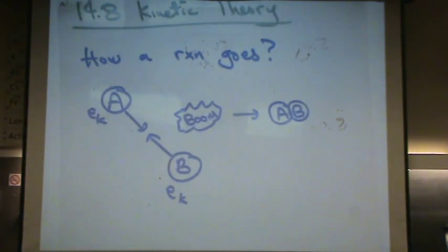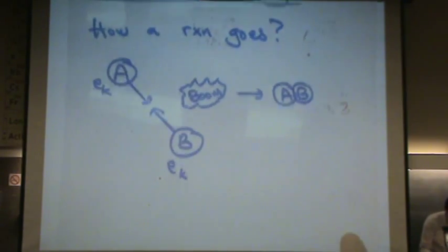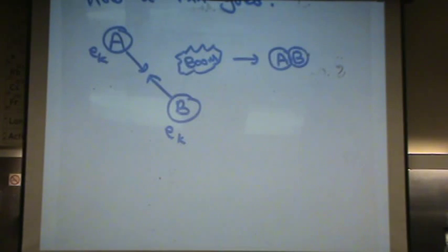What are the factors that allow for this to happen? Well, A and B must hit dead on. Does that make sense? If they miss each other or if they just tag each other on the side, it's not going to work. So they must hit dead on, a direct hit.